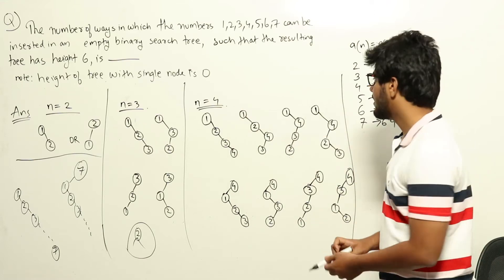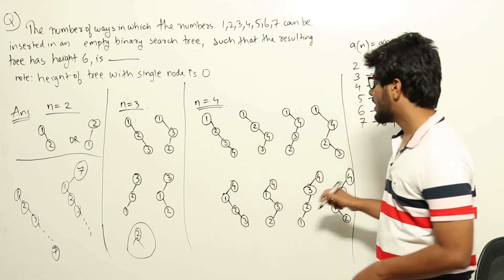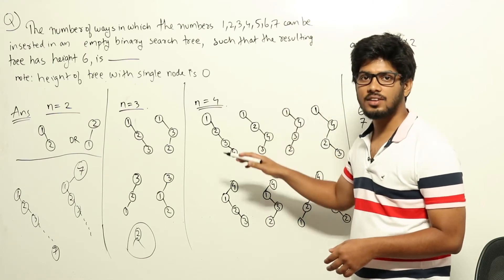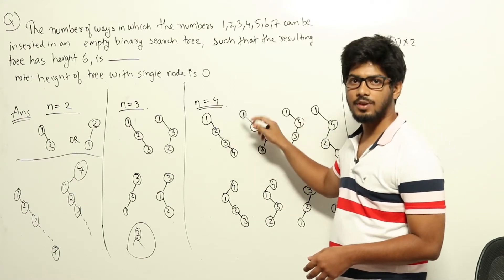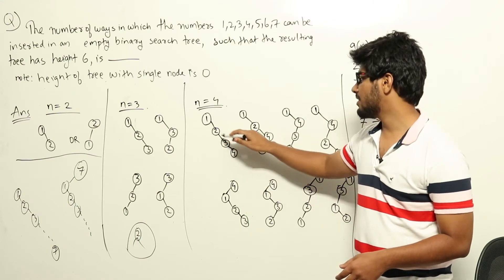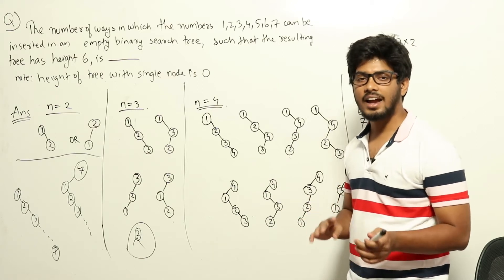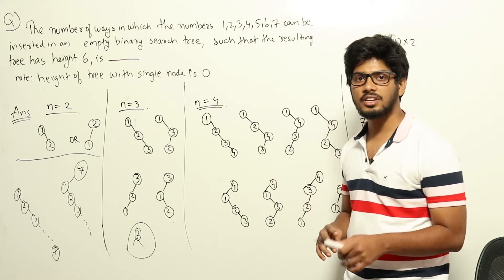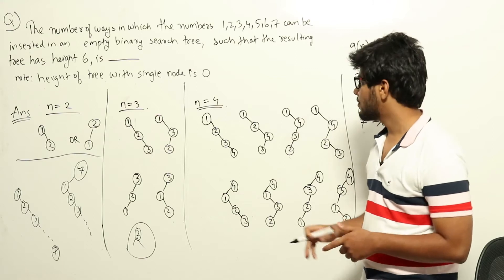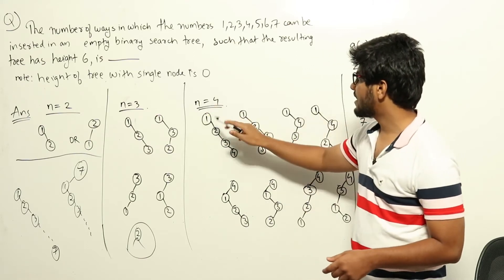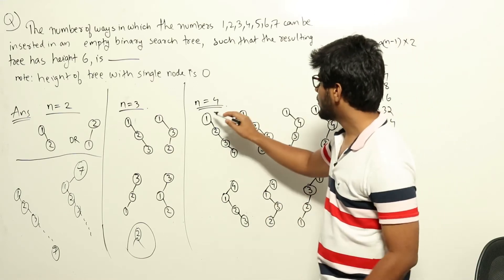For n=4, the root node must be either 1 or 4. If the root is 3, then 1 and 2 come to the left and 4 to the right. If the root is 2, then 1 comes to the left and 3 and 4 to the right. Adding 2 or 3 as the root would give the root two children, which breaks the chain. So for numbers 1 to 4, only 1 or 4 can be the root.